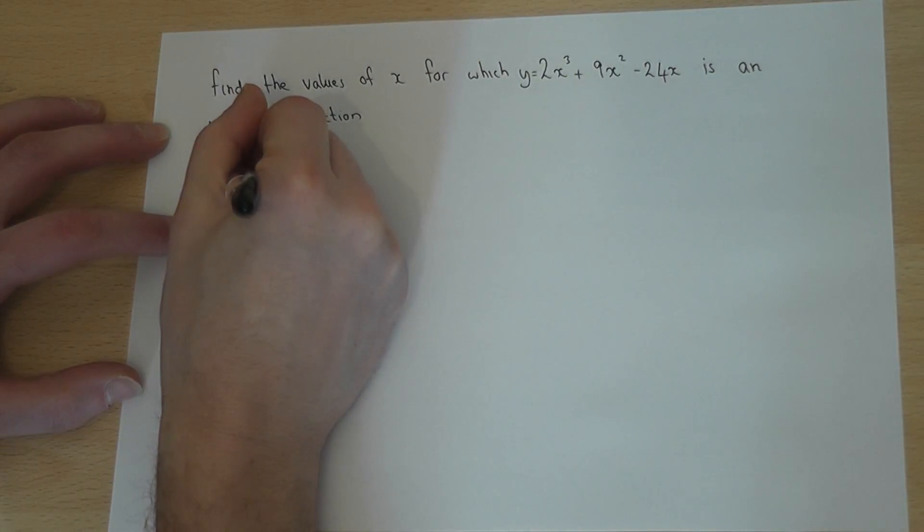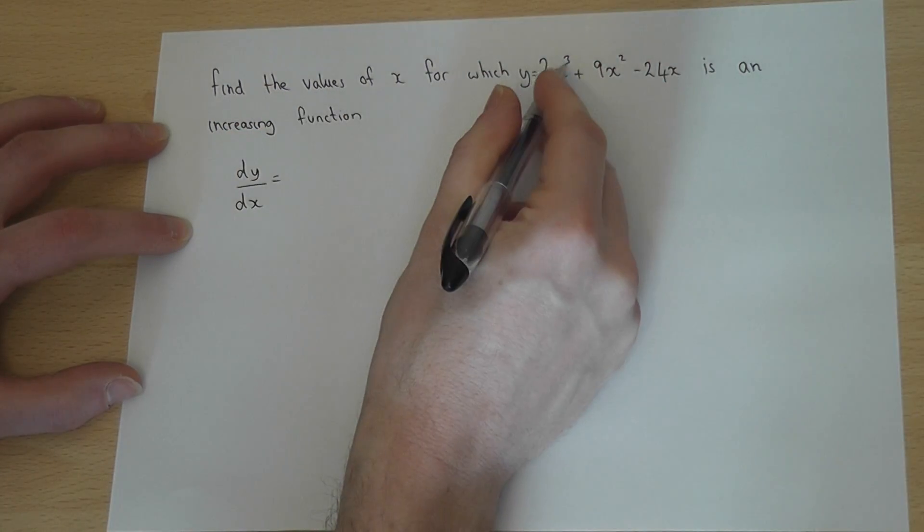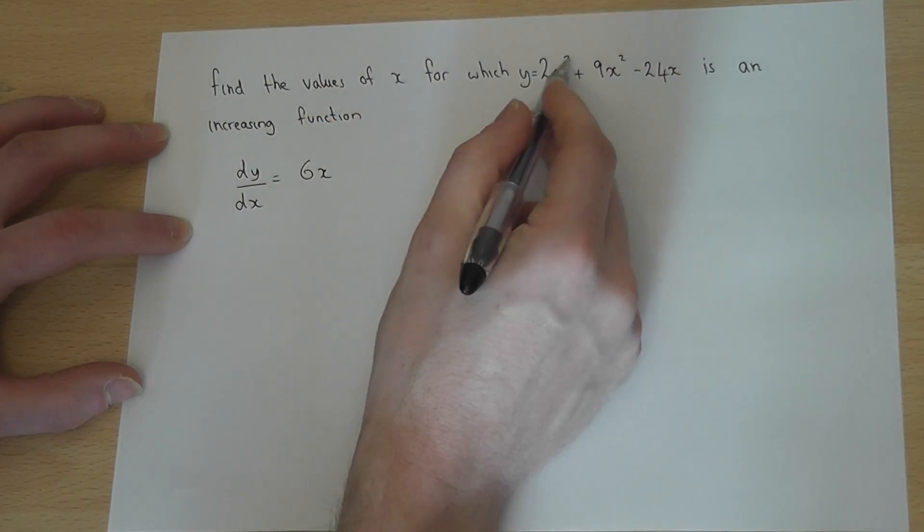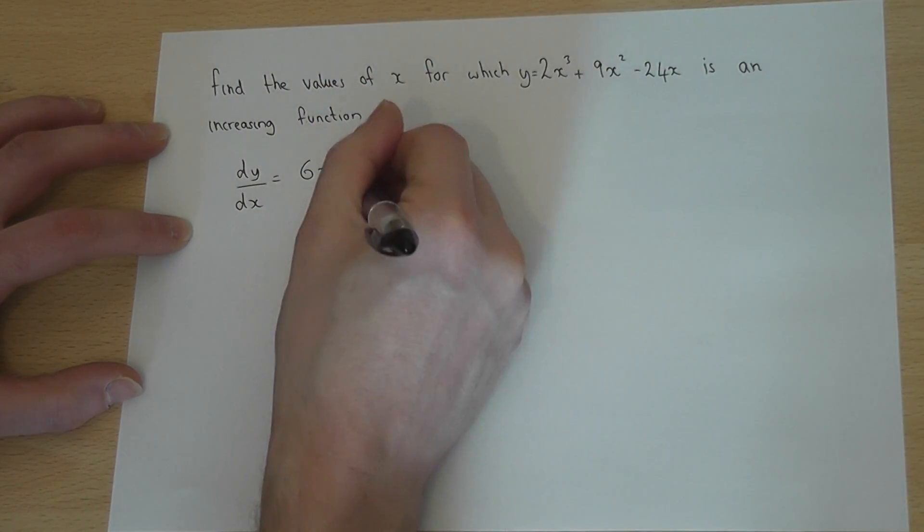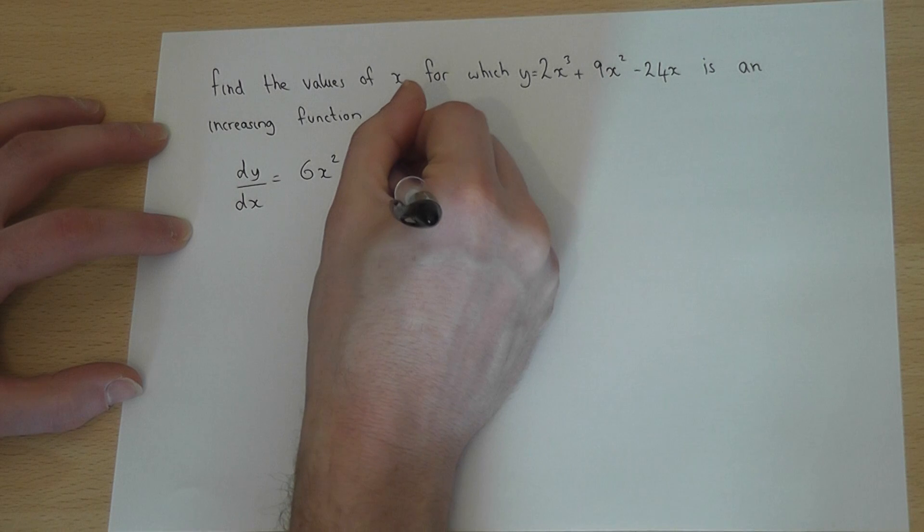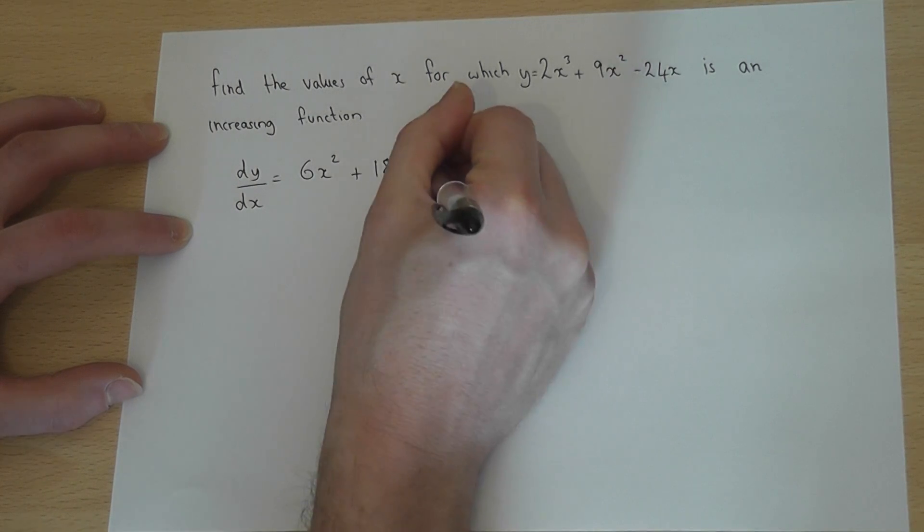If we differentiate this function to find dy/dx, we get 6x squared plus 18x minus 24.